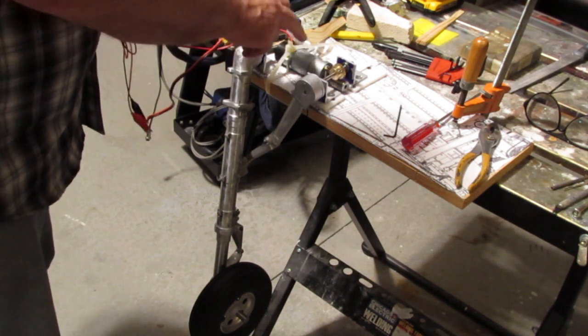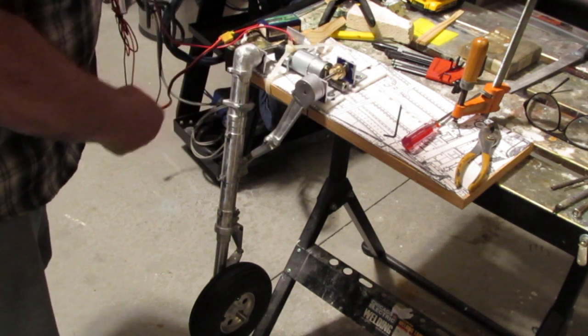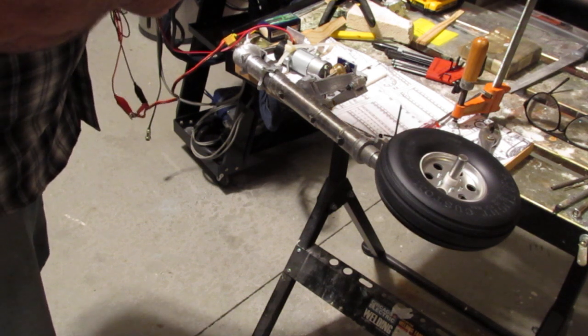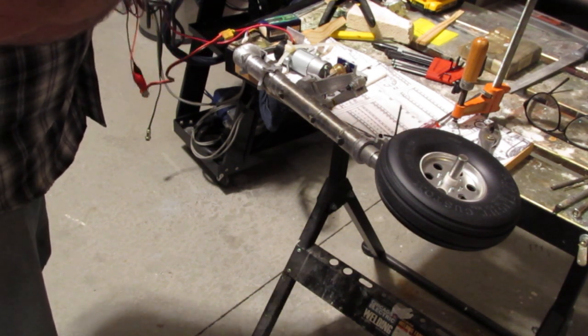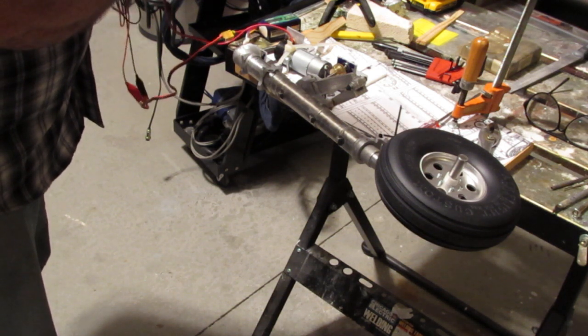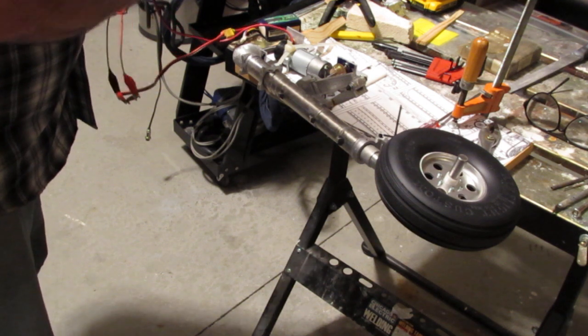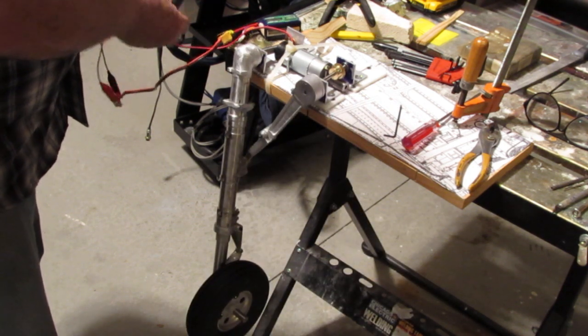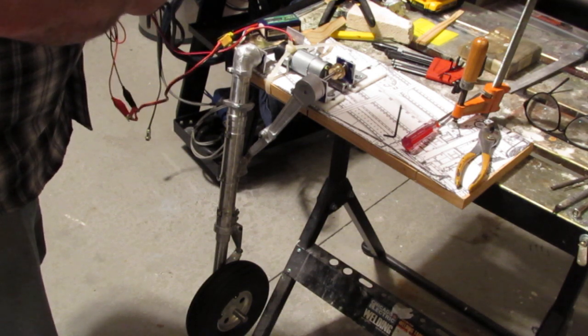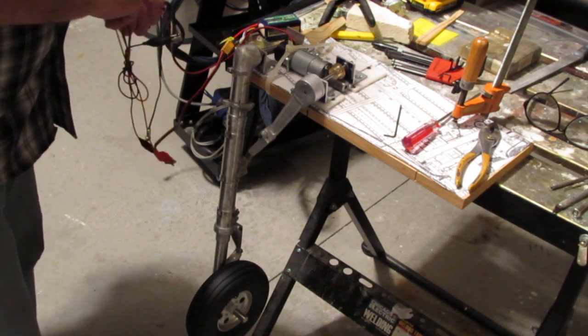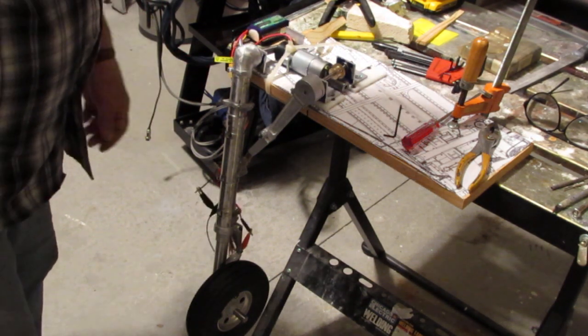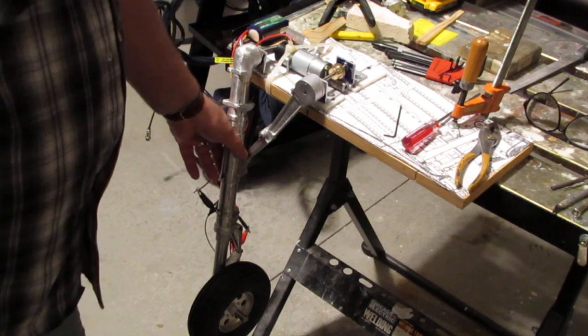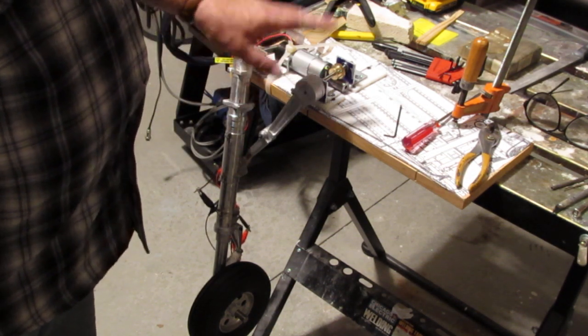But anyway, I wanted to make sure that this motor and this configuration was going to work to lift this. And there you go. There you go. And the reason I chose the worm is that... Let's retract this first. The reason I chose the worm over, let's say, a trunnion, like we typically use on retracts in RC, is that there's zero slop in this. I don't need an up lock. This thing goes where you put it.